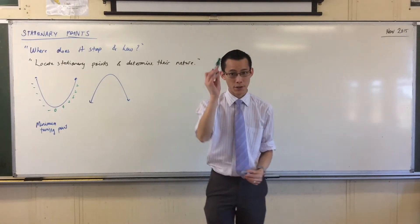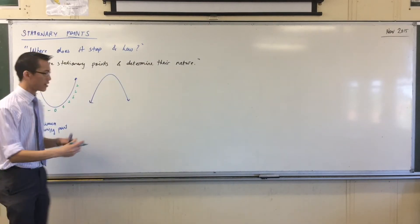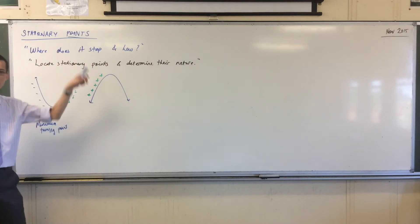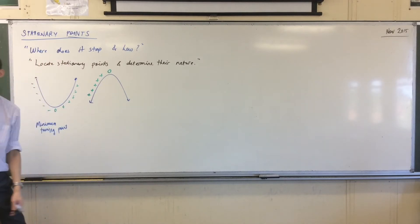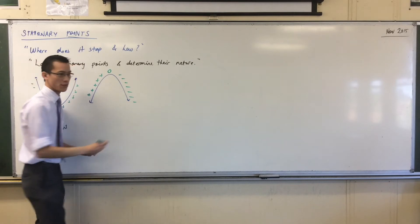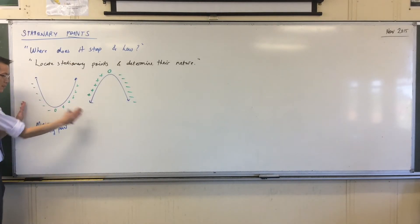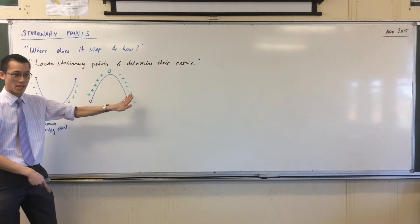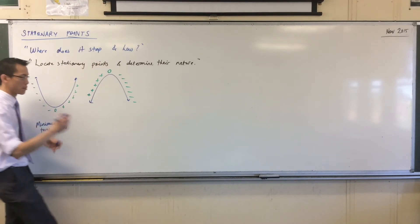In exactly the same way — green for gradient — this one is doing the opposite. My gradient going from left to right is positive, positive, positive, and then hits zero at the stationary point, which means a tangent drawn at that spot would be horizontal. And then it goes negative after. So if I transition from positive to zero to negative, you can see I'm right at the top of the graph — we call this a maximum turning point.